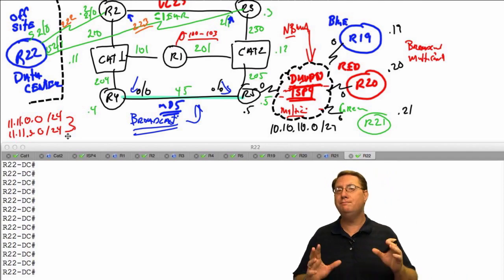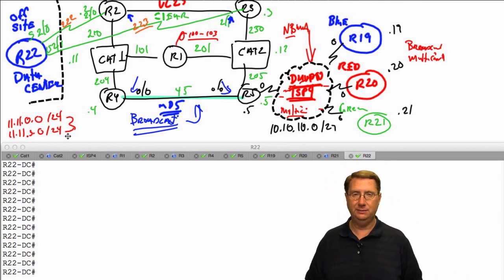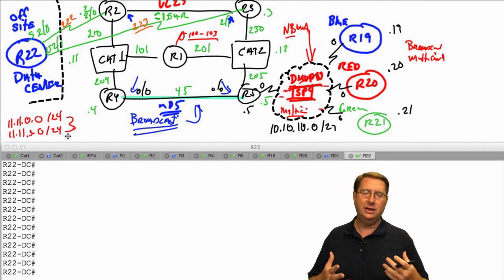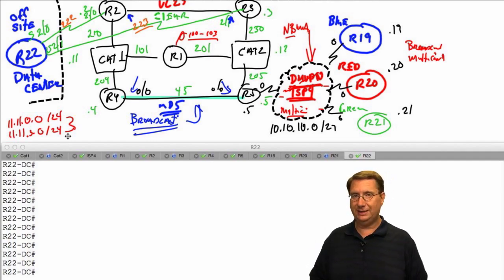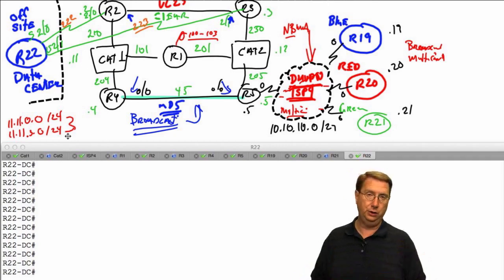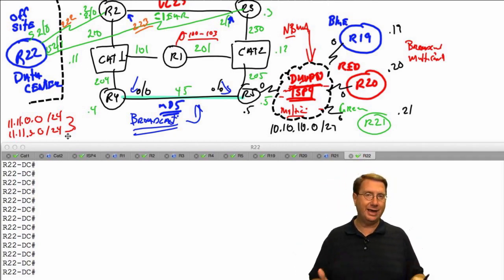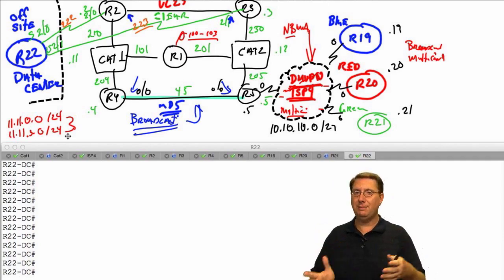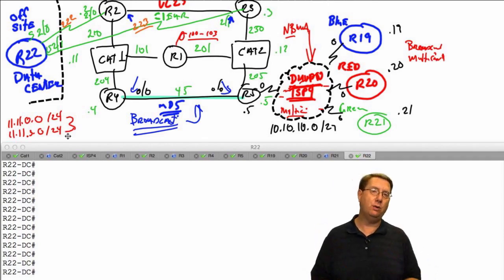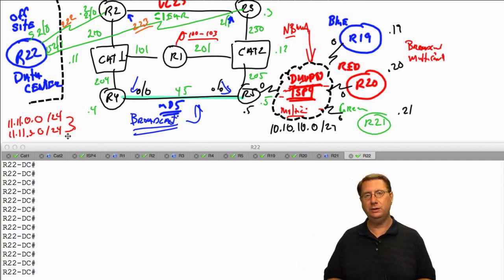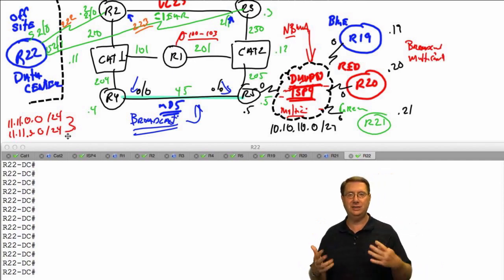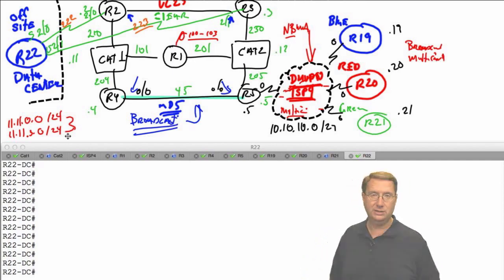Then we're going to use manual summarization to manipulate things. Now, I said summarization was a bad thing - well, auto summarization is a bad thing because as an administrator you have no control over it. What we want to do is use manual summarization on a case by case basis, normally on a link by link basis, in order to manipulate what's actually happening in our environment.